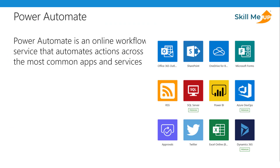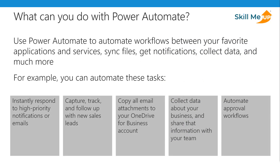Next we'll take a look at Power Automate — an online workflow service that automates actions across common apps and services. For example, you can create a workflow that adds a lead to Microsoft Dynamics 365 and a record in MailChimp whenever more than 100 followers tweet about your company. When you sign up, you can connect to more than hundreds of services and manage data either in the cloud or on-prem through sources like SharePoint or SQL Server. You can send high-priority notifications on specific emails, capture and follow up on new sales leads, extract email attachments to OneDrive for Business, and collect and share business data with your team via chatbot or email.